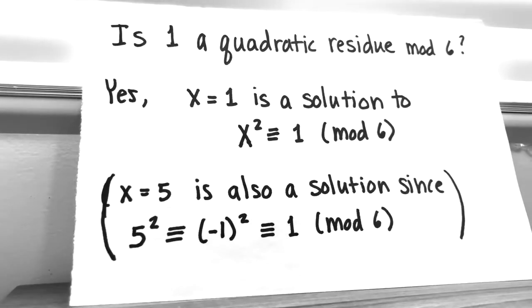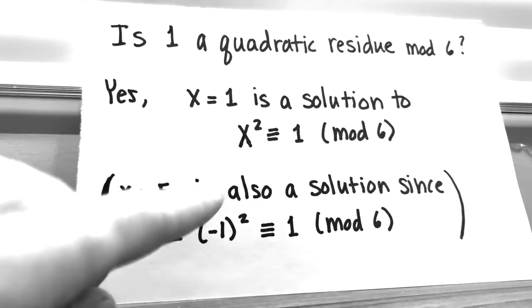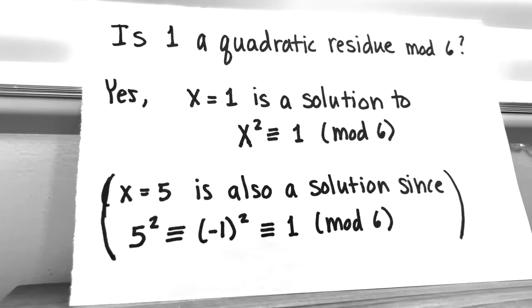So for example, let's look at whether or not 1 is a quadratic residue mod 6. Spoiler, 1 is always going to be a quadratic residue mod anything bigger than or equal to 2. And that's just because 1 is already a square. 1 is equal to 1 squared. So x equals 1 is a solution to this equation x squared congruent to 1 mod 6. So since there's an x such that this congruence holds, then 1 is a quadratic residue mod 6.